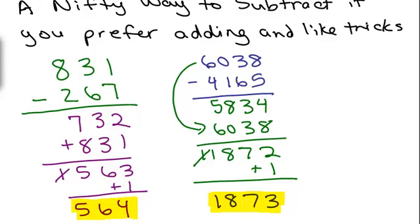You can always check these by adding 1873 plus 4165. Make sure you really do get 6038. Same thing for this other one. You could add 564 plus 267, and you should get 831.